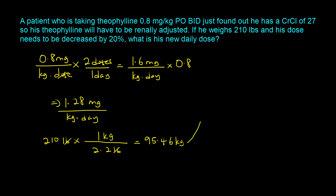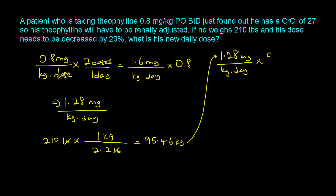Multiply the renally adjusted normalized dose of 1.28 mg/kg/day by the patient's weight of 95.46 kilograms. The kilograms cancel out, and you end up with 122.2 milligrams per day as the new daily dose.